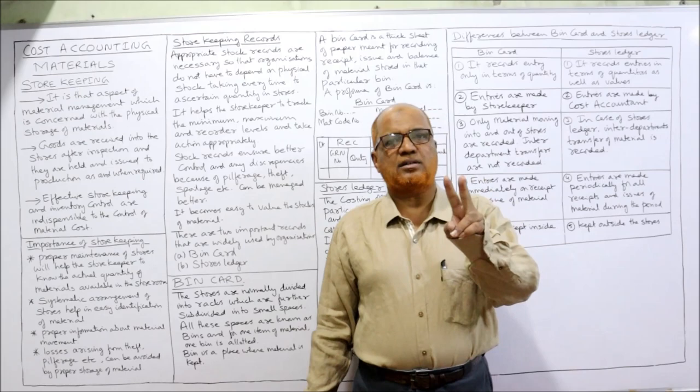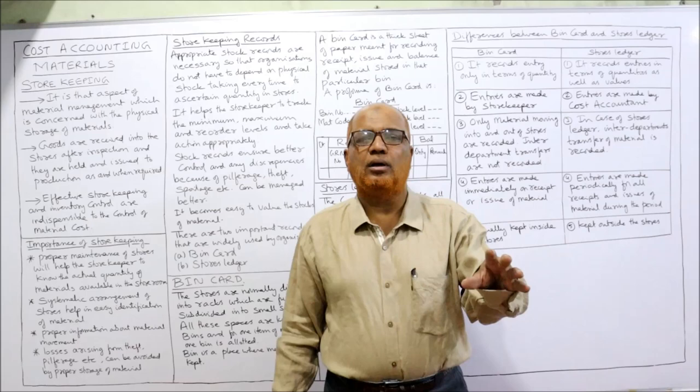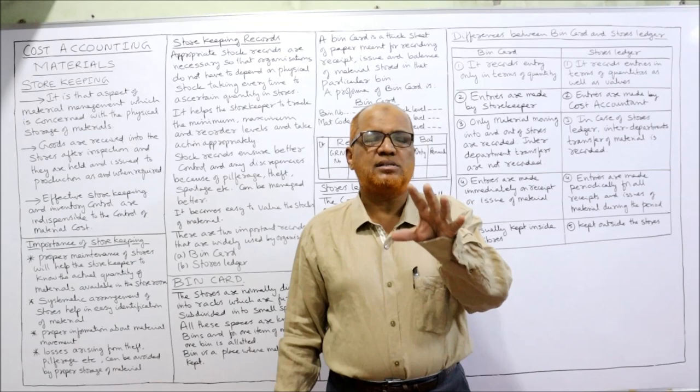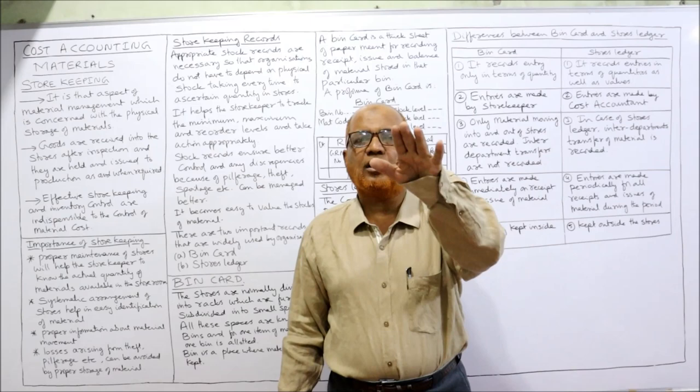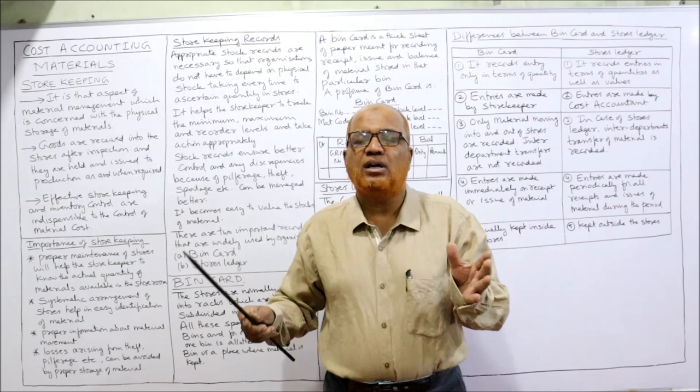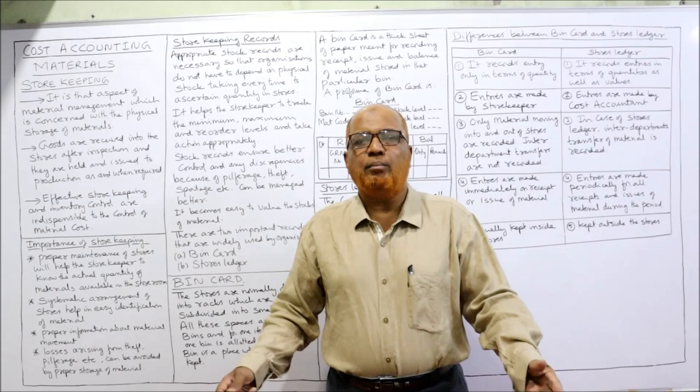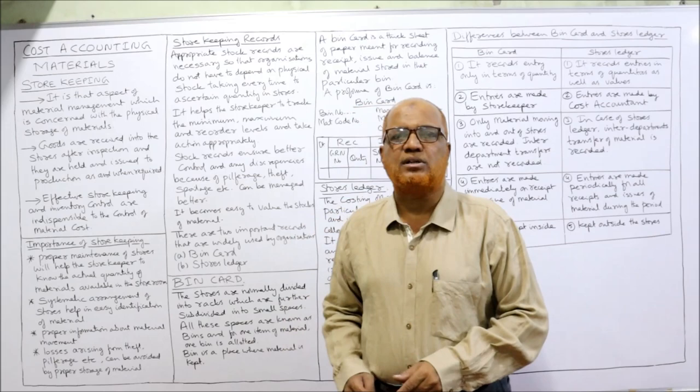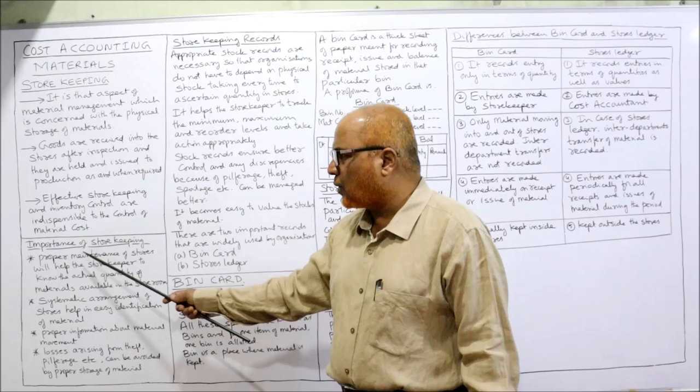Effective store keeping and inventory control are indispensable for control of material cost. These are the two aspects of material management. When the business focuses more on store keeping and inventory control, the cost of material will come down. Otherwise, if management does not give full focus on these areas, material cost will increase, total cost of production increases, and profitability decreases.